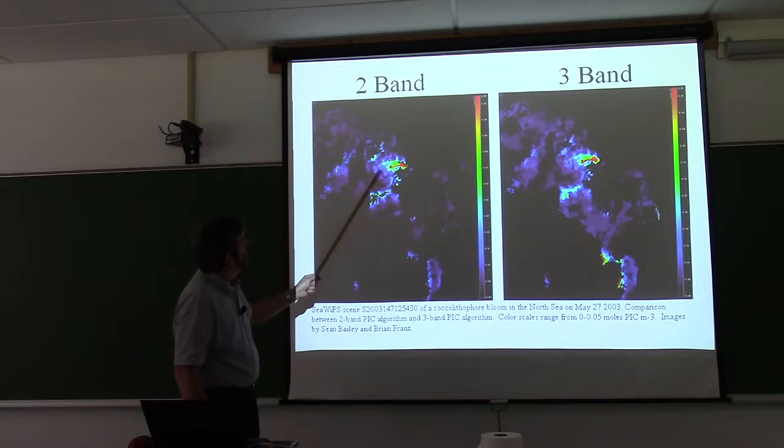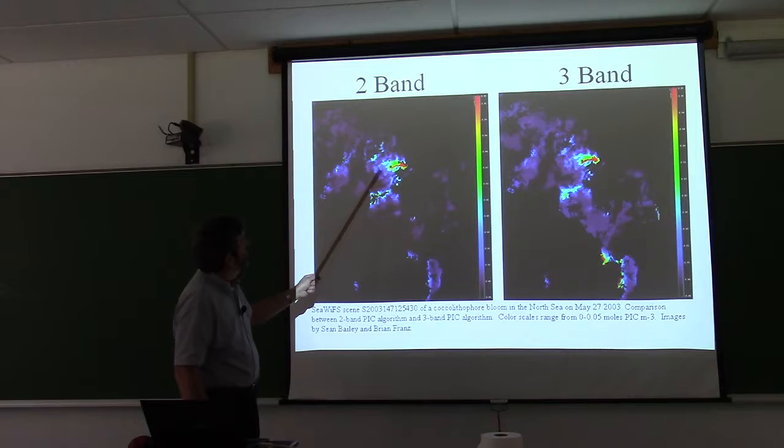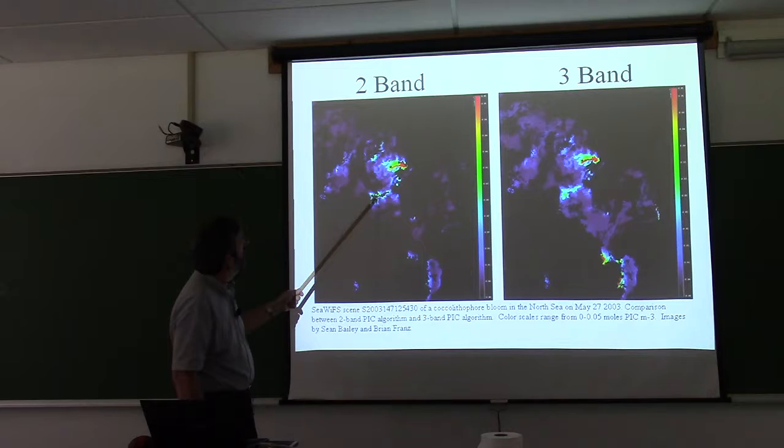As an example, here's the two-band algorithm versus the three-band algorithm for the same feature. This is off of the Western European shelf. This feature here was saturated in the two-band, but with the three-band there's no saturation.